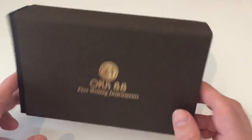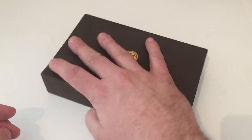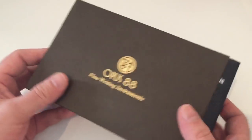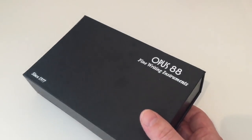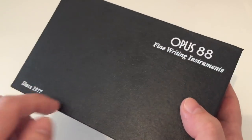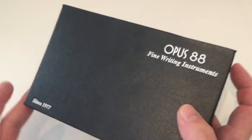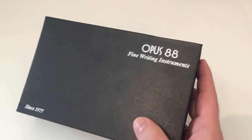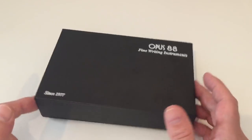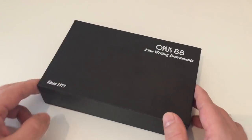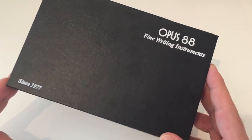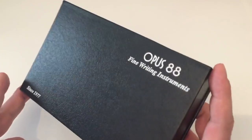It comes in this quite large box here. It says Opus 88, fine writing instruments, a black cardboard box that slides out to expose a fake leatherish box. It says Opus 88 fine writing instruments since 1977, so the company apparently has a quite long history of manufacturing writing instruments.